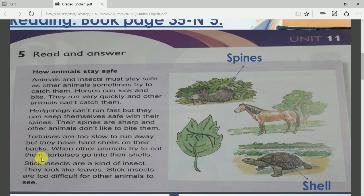Stick insects are a kind of insect. They look like leaves. Stick insects are too difficult for other animals to see.